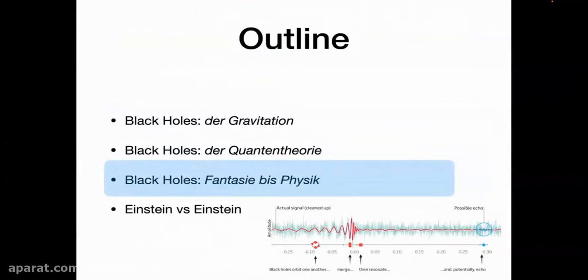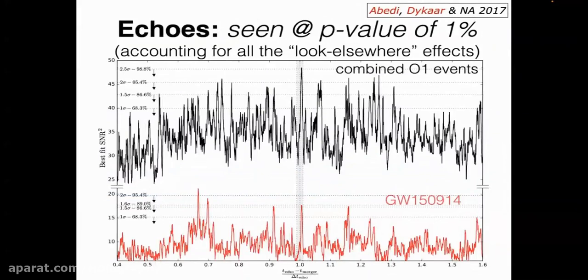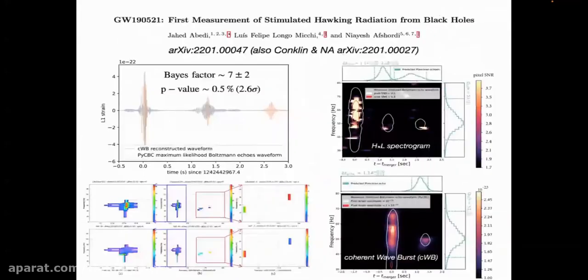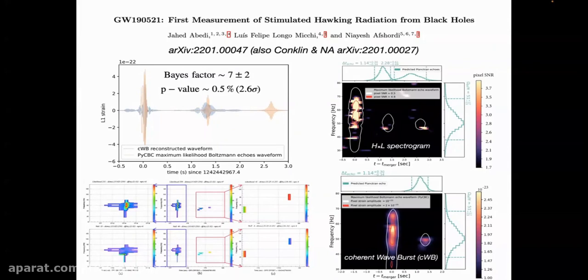Finally, I just want to say that a lot of groups have searched for echoes, and there is controversial evidence for it. We first did it in 2017 and found some signal from three events that LIGO first saw with p-value of one percent, which is like two and a half sigma. It's not earth-shattering, but it's interesting. Most recently, two months ago, we posted this paper where we searched for these echoes, or stimulated Hawking radiation.